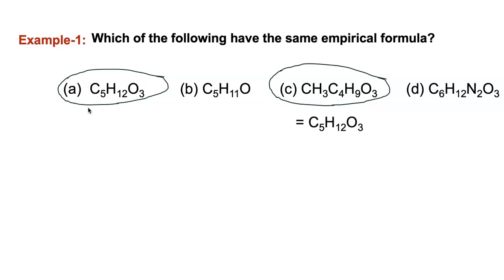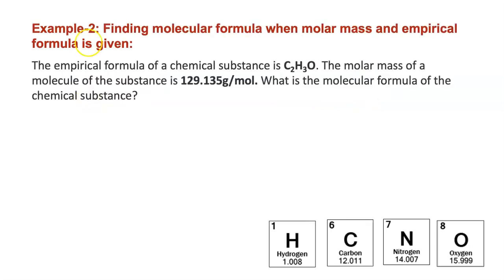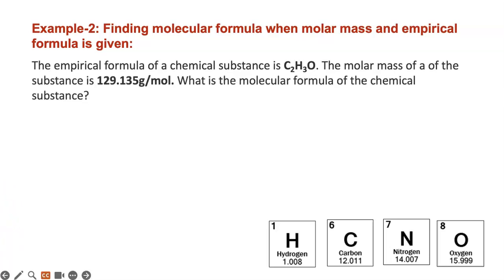The next two questions are more calculation heavy. Here's one: finding the molecular formula when the molar mass and the empirical formula are given. The empirical formula of a chemical substance is C2H3O. The molar mass of the substance is 129.135 grams per mole. What is the molecular formula? Based on what we learned, you are going to find the empirical formula mass, divide the molar mass by it to find the factor, then multiply the empirical formula by that factor to get the molecular formula.